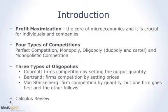There are four basic types of competitions: perfect competition, monopoly, oligopoly, and monopolistic competition. You should have taken an introductory course in economics before, so you should know what these terms are. We're not going to go through them in this course. We will spend most of our time looking at the oligopolies, and in particular, we will focus on three types of oligopoly.